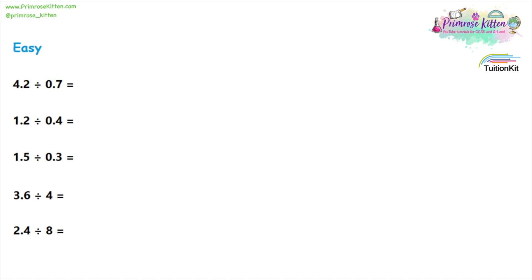These are the questions we are going to look at first when we are dividing decimals. When we're dividing decimals, what we're actually doing is asking ourselves how many 0.7s fit into 4.2. We're going to go through two methods here. First we're going to go through a basic method, then we're going to make it a bit more complicated. So let's find out how many 0.7s do fit in 4.2.